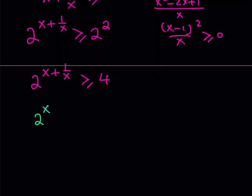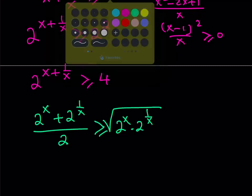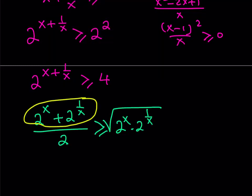You add the numbers, divide by 2, and then you multiply the numbers and square root. That's the geometric mean. And AMGM says that the arithmetic mean is always greater than or equal to the geometric mean. But notice that we have 2 to the power of x plus 2 to the power of 1 over x here, which happens to be 4.